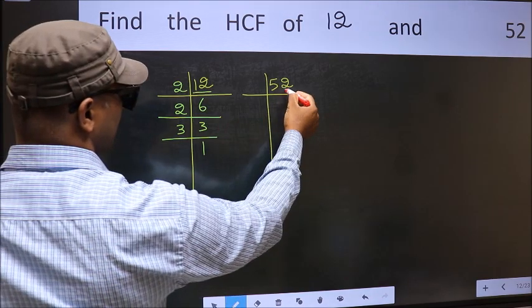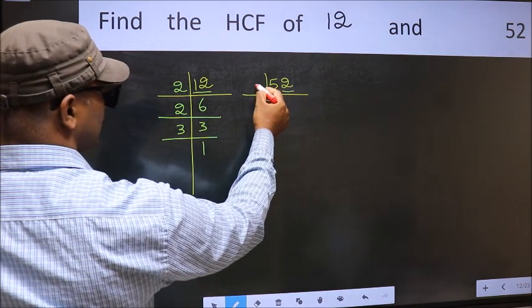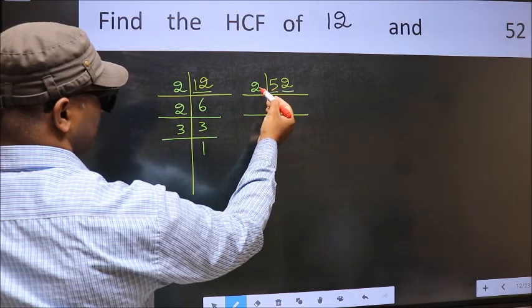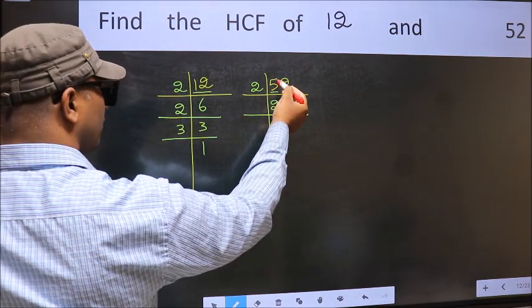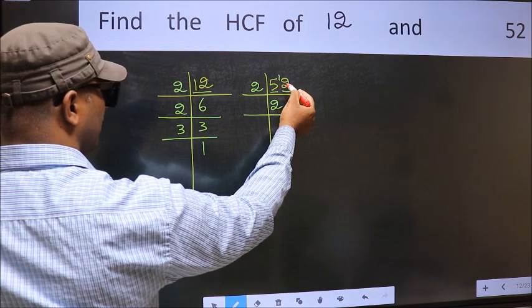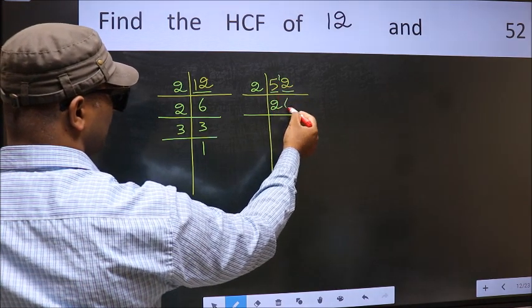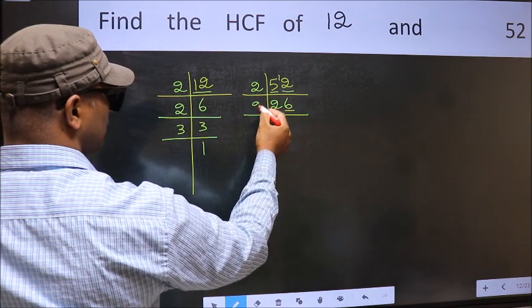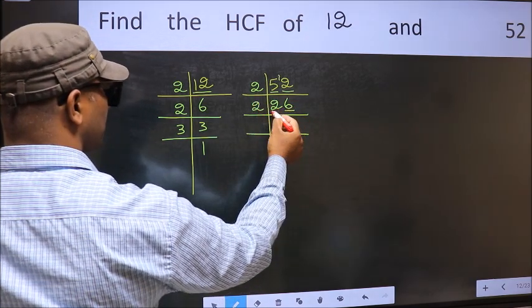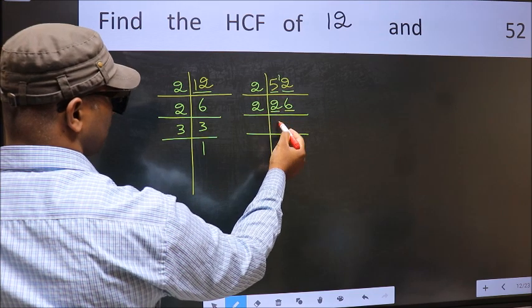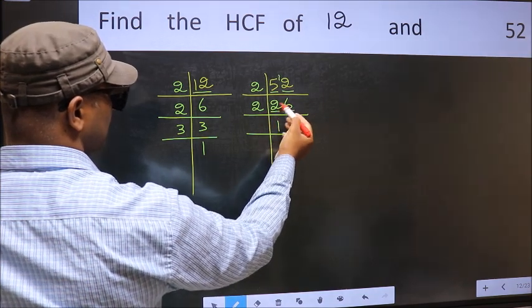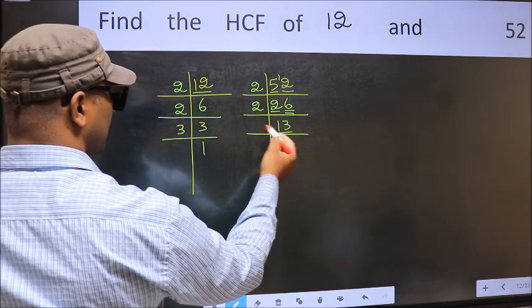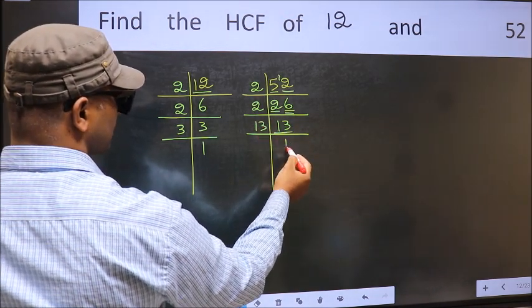Now the other number. Last digit is 2, even, so take 2. First number 5. A number close to 5 in the 2 table is 2 times 26. Now last digit is 6, even, so take 2. First number 2. When do we get 2 in the 2 table? 2 times 1 is 2. The other number 6. When do we get 6 in the 2 table? 2 times 3 is 6. Now 13 is a prime number, so 13 times 1 is 13.